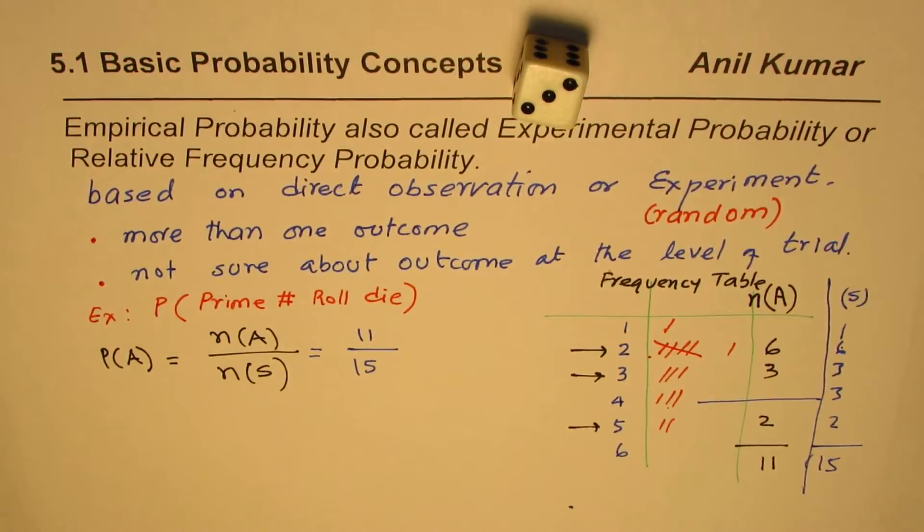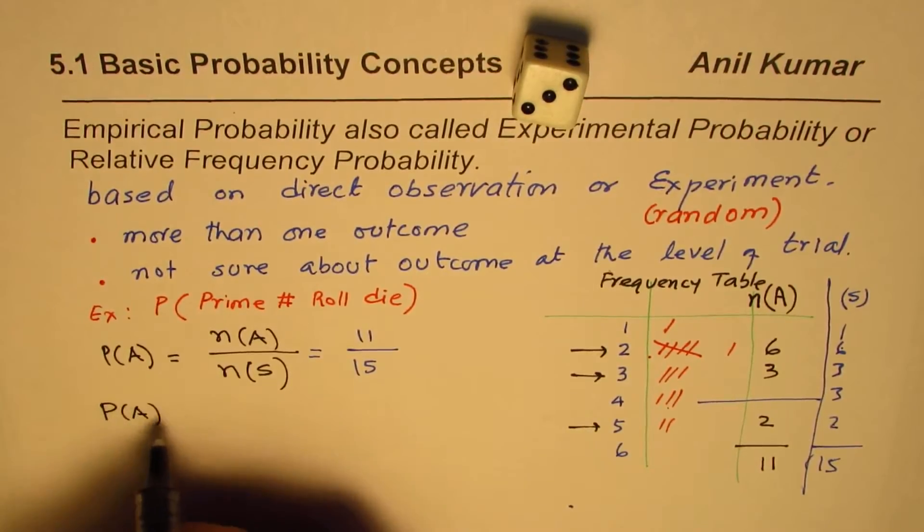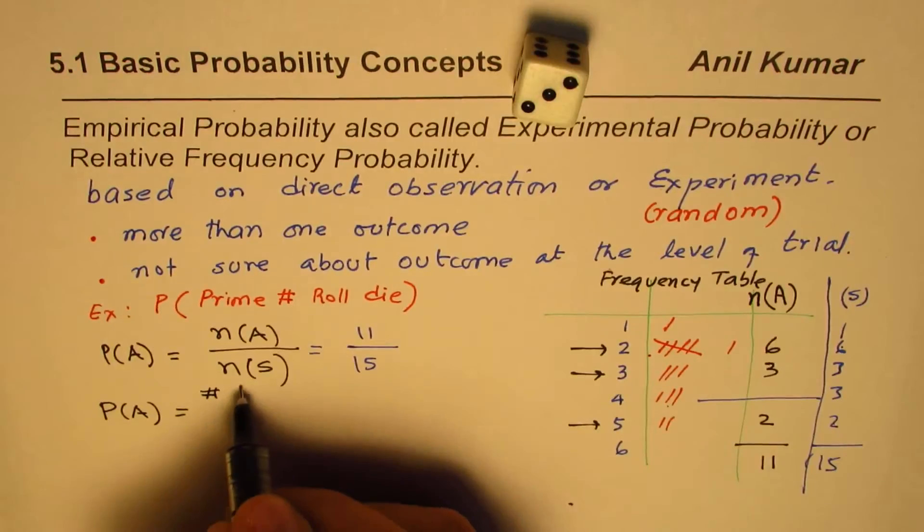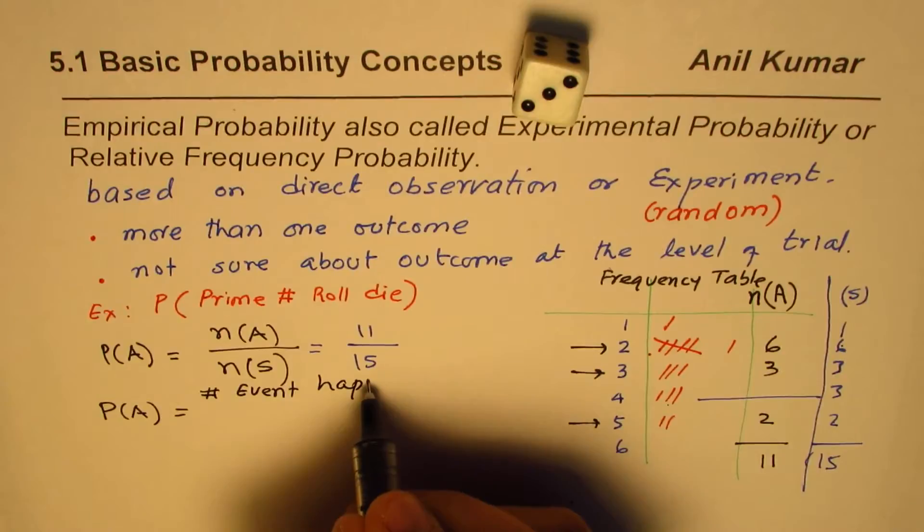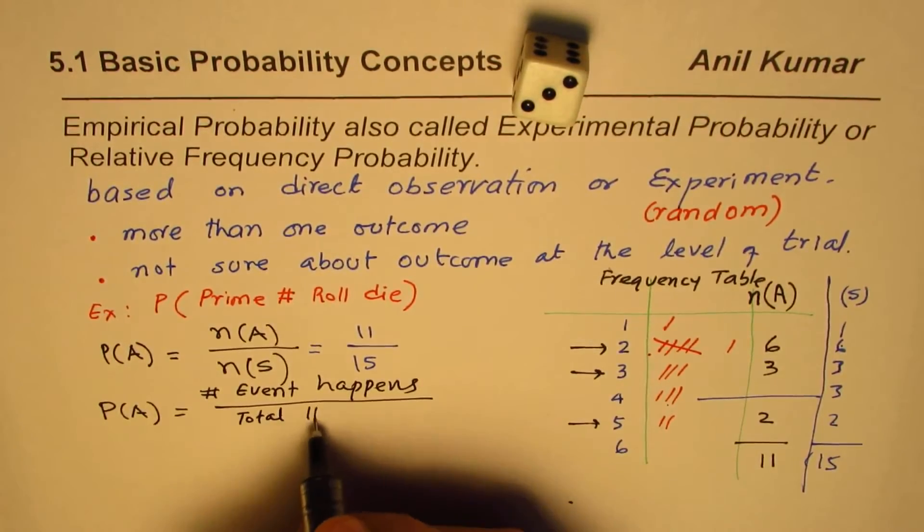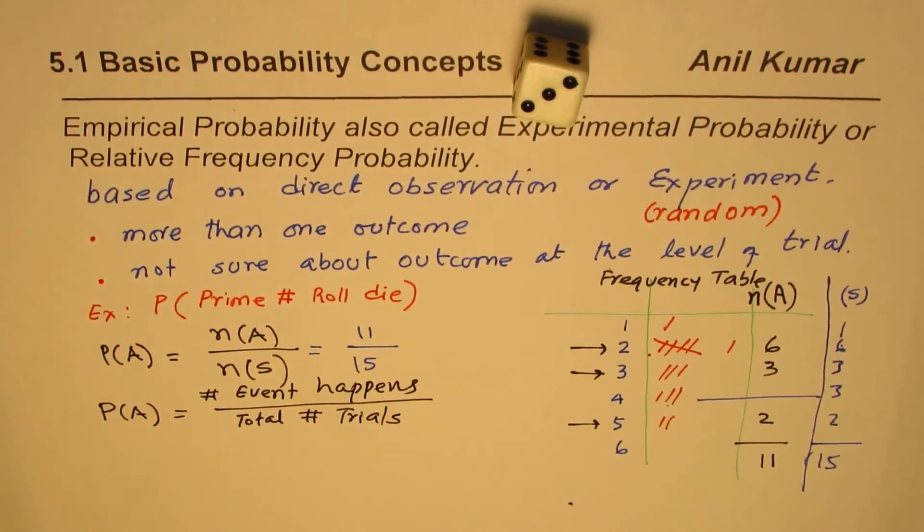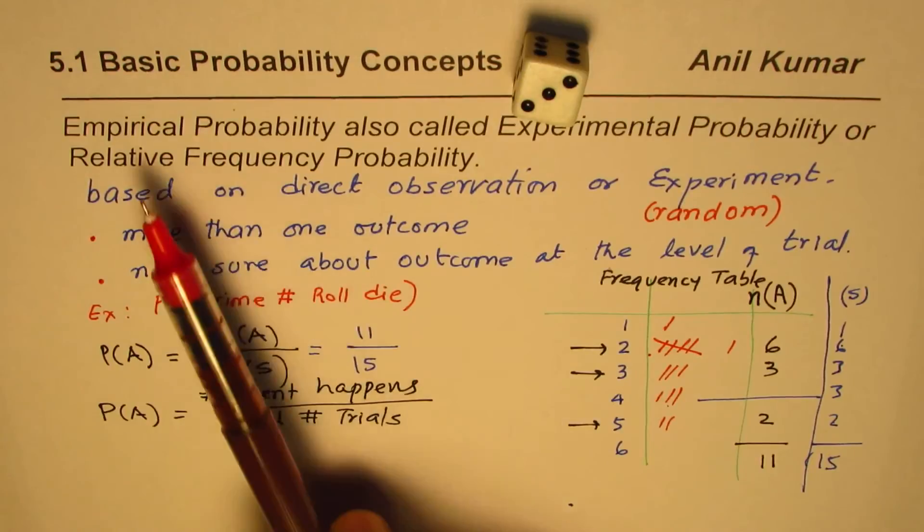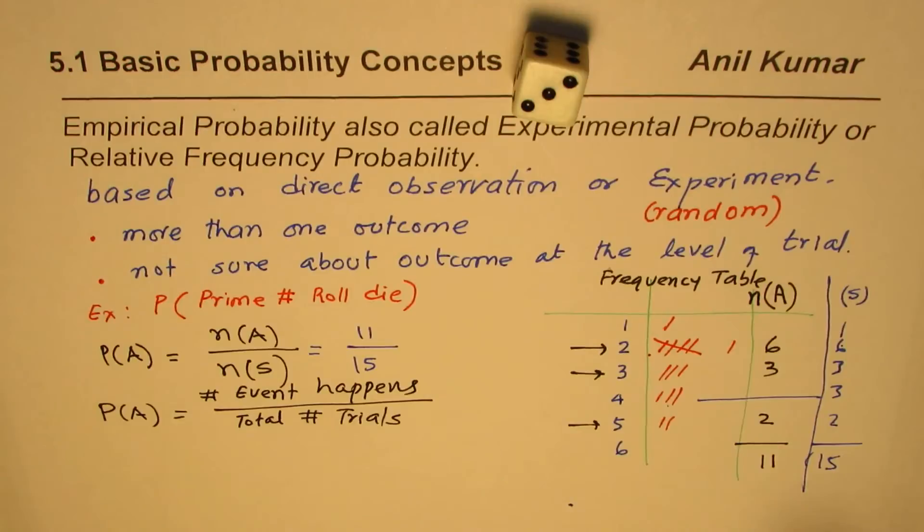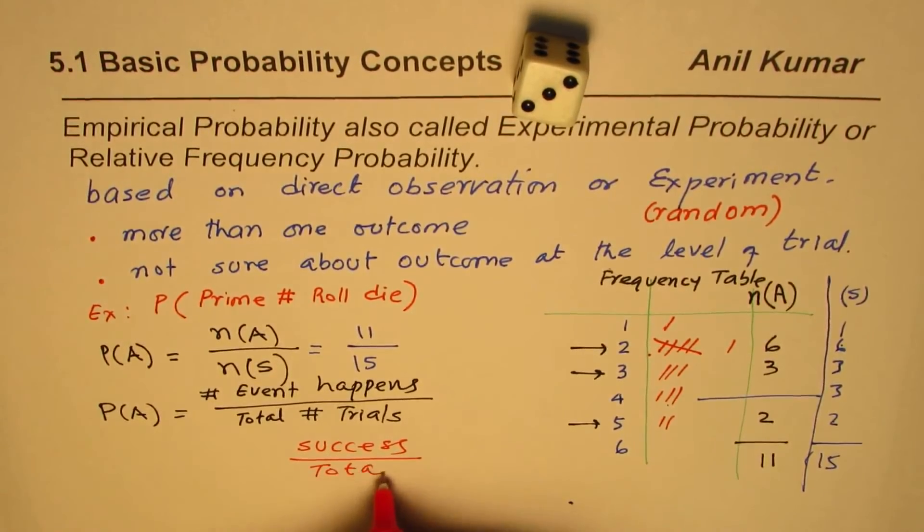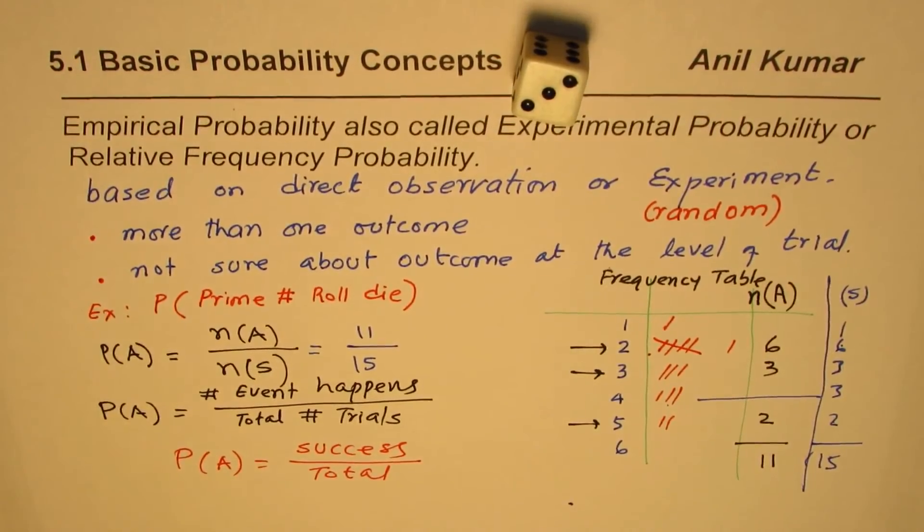So basically, that is the formula which we normally use. But what you really find here is that the formula used is number of times the activity or event actually happened. So we'll write this normally as number of times event happens, or it is success, to the total number of trials. So most of the time when you're doing experimental probability, you're talking about these terms, not those terms. So in case of probability, when we are doing it experimentally, we are just checking success versus total. And that gives us the experimental probability for us.